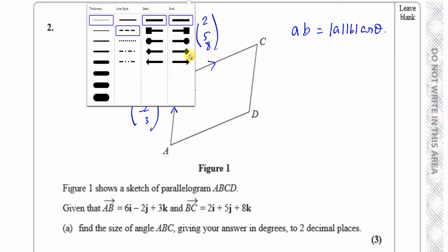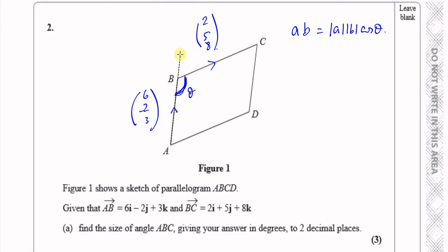So if I continue this line along, if I continue this line AB along like that, if I use these two vectors as they are, I'm going to be finding this angle here, the angle between them as they are tail to tail.